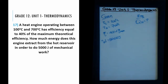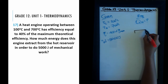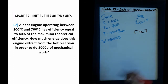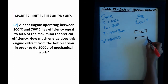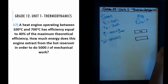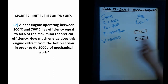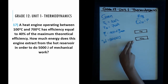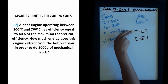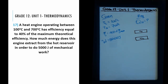Let's draw out what a heat engine actually is. You have a hot reservoir with temperature T_hot, and also a cold reservoir — or cold sink — with temperature T_C. The second law of thermodynamics states that energy spontaneously moves from a hot source to a cold source, never the other way around. Energy is removed from the hot reservoir into the cold sink.